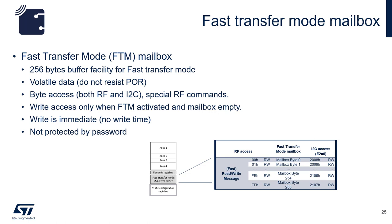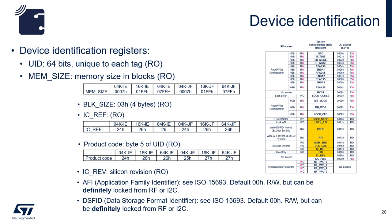The Fast Transfer Mode mailbox is a 256-byte volatile buffer accessible only by special RF commands. Write accesses can only occur when the Fast Transfer Mode is activated and the mailbox is empty. The mailbox is not protected by password, and writes are immediate versus EEPROM. The remaining memory is read-only and dedicated to device identification.